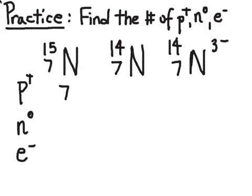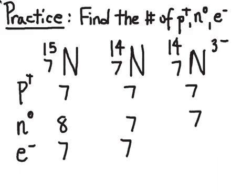For nitrogen-15, it has 7 protons, 8 neutrons, and 7 electrons — I looked at the mass number and atomic number to determine this. For nitrogen-14, I have a different number of neutrons: 7 protons because it wouldn't be nitrogen otherwise, and 7 neutrons because 7 plus 7 is 14, and no charge so 7 electrons. For the nitrogen ion, I have the same protons and neutrons — 7 of each because it's nitrogen-14 — but now there's an imbalance in electrons. It tells me I have 3 more electrons than protons, so I have 10 electrons in that particular ion of nitrogen.